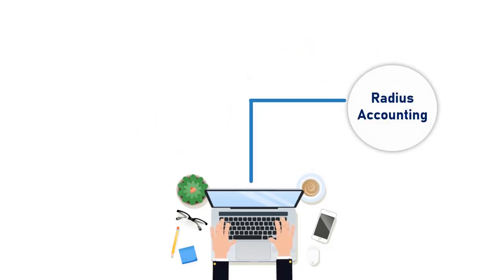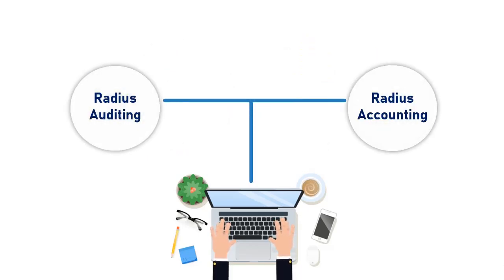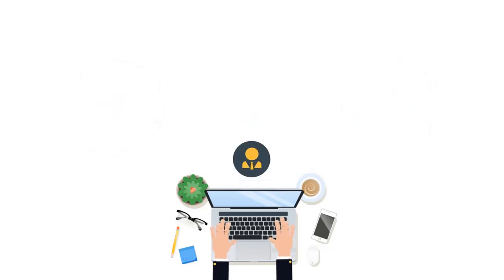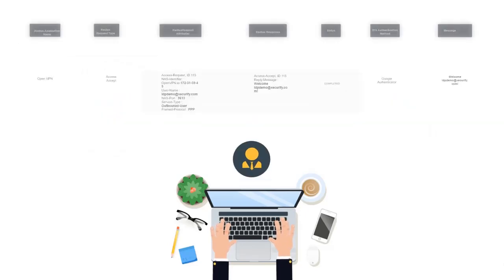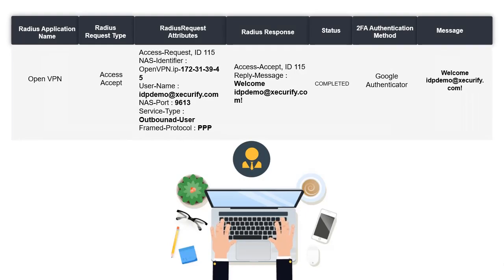Additional features like radius accounting and radius auditing are also included in the Mini Orange feature stack. This allows the administrator to keep track of the VPN usage of the users as well as all of their login events.